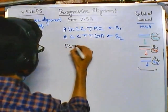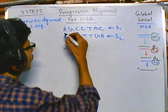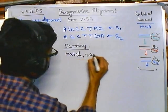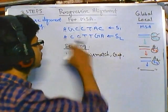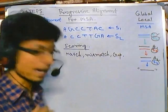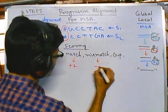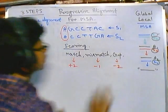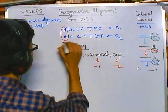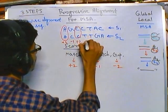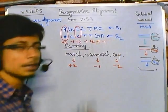We need to consider these three things because these are the possibilities for two sequences to align: match, mismatch, and gap. Suppose for a match we provide a score of +2, for a mismatch -1, and for a gap -2. If this is the scoring, then for a match it is +2, mismatch -1, another match +2, another mismatch -1, another match +2, mismatch -1, mismatch -1. In this case we don't have any gap.